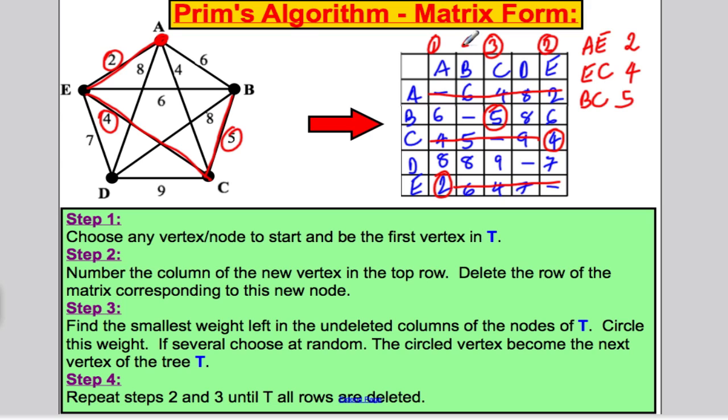Now look down your tree in the things you've numbered and find the smallest out of 8, 8, 9, and 7. Seven is clearly the smallest. So D, E is the last thing in your tree. D, E of seven is the last thing in your tree. That's number five. Cross off that row. And now all the rows are deleted, so you stop. Here's your spanning tree. D, E was the last thing to include. If you add that up, two and four is six, six and five is 11, and 11 and seven is 18. So the minimal spanning tree has weight 18 as we found previously.